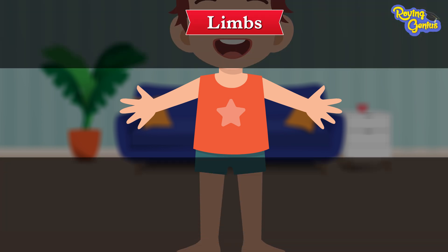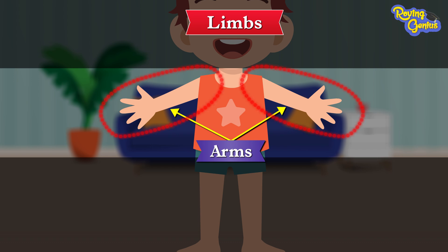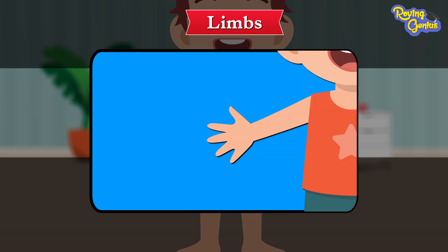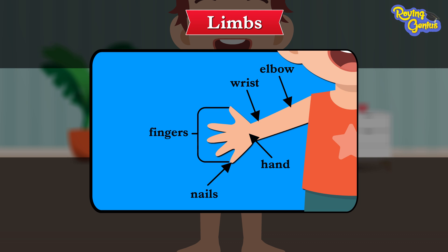Our upper limbs are our arms. Our arms are connected to the trunk by our shoulders. We can find our elbow, wrist, hand, fingers, and nails on our arm.